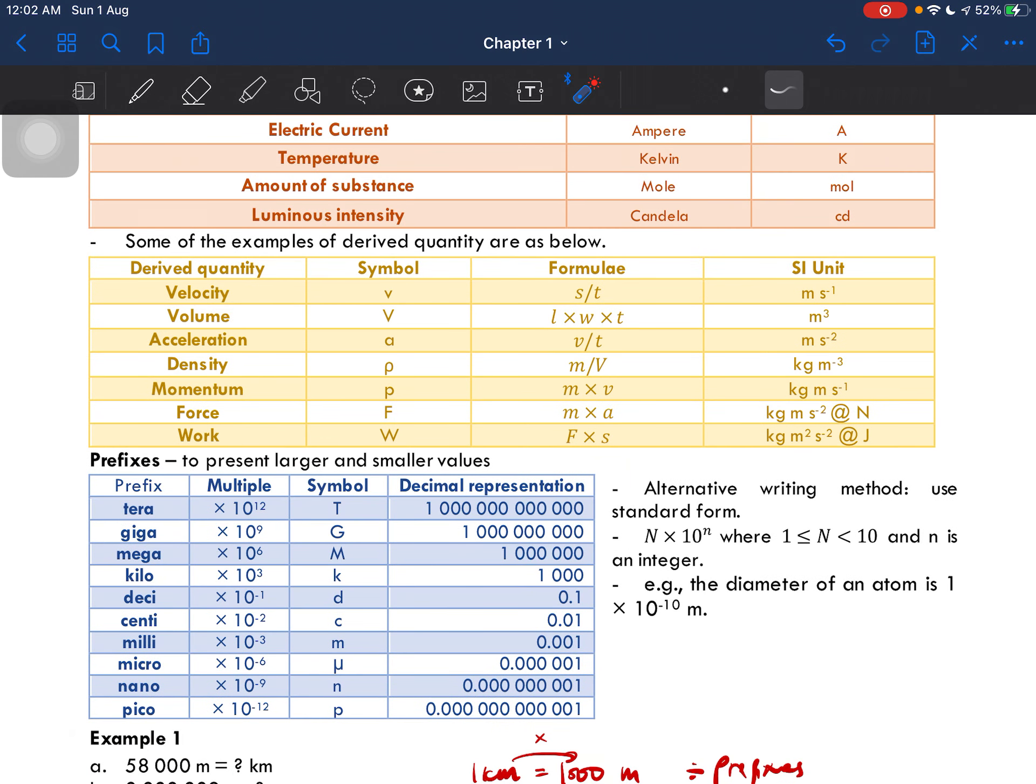And for this one, these are some of the examples for derived quantity. The formula here is given because you need to be able to know how to calculate each of this quantity. Why? Because we will be using this to find four-dimensional analysis so that we can find the SI unit here.